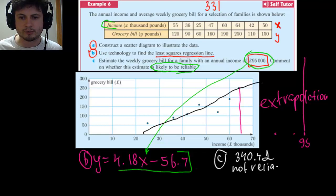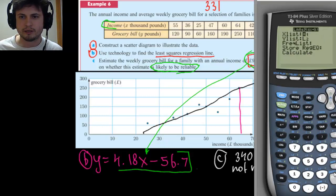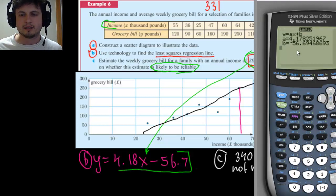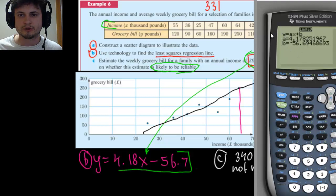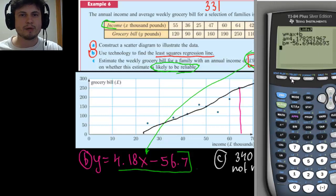The answer to question C is £340.40 per week, but it's not very reliable because it's extrapolation. That's really it — all you need to remember is how to find the regression formula using linear regression on the calculator, and remember to store it. If you can do this, you should be absolutely fine. Thanks for watching, please subscribe, and good luck — bye bye!